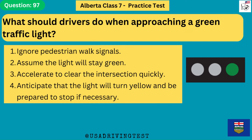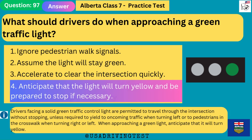What should drivers do when approaching a green traffic light? 1. Ignore pedestrian walk signals. 2. Assume the light will stay green. 3. Accelerate to clear the intersection quickly. 4. Anticipate that the light will turn yellow and be prepared to stop if necessary. The answer is 4. Drivers facing a solid green traffic control light are permitted to travel through the intersection without stopping, unless required to yield to oncoming traffic when turning left or to pedestrians in the crosswalk. When approaching a green light, anticipate that it will turn yellow.